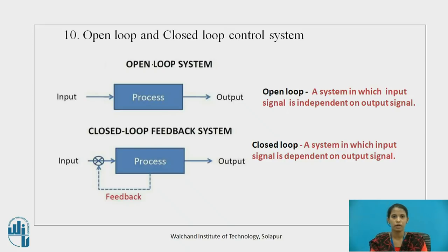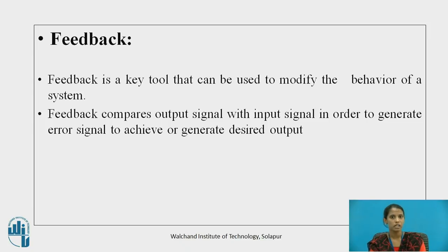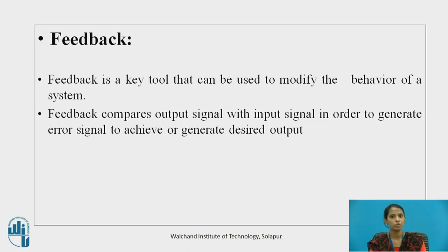A feedback element is introduced in closed loop systems. Feedback is a key tool that can be used to modify the behavior of a system. Feedback compares the output signal with the input signal in order to generate an error signal to achieve the desired output. Feedback is present in closed loop control systems.